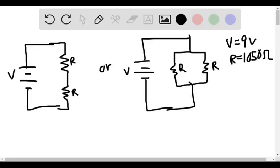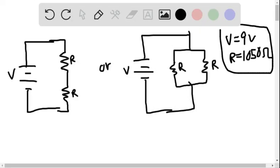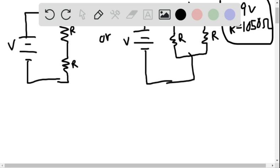Okay, so I know that the voltage is 9 volts and we have two resistors. We could wire them up in series or in parallel. So we want to do the one that's going to give us the most current.